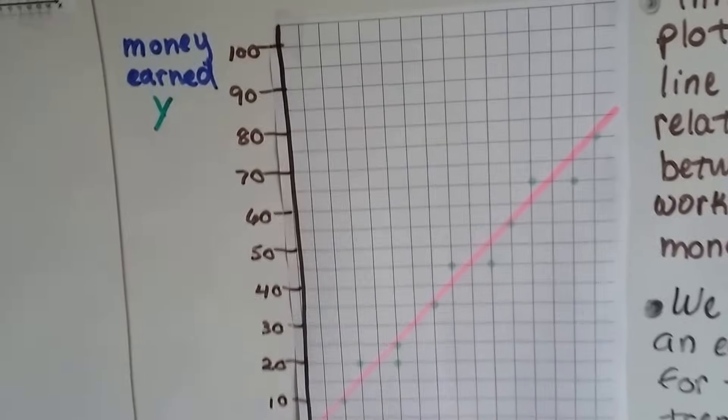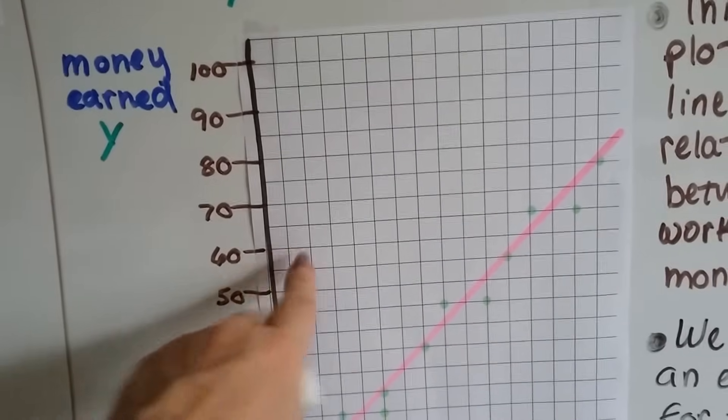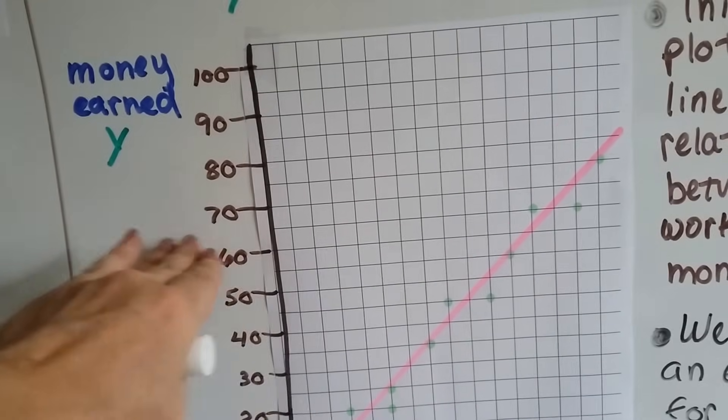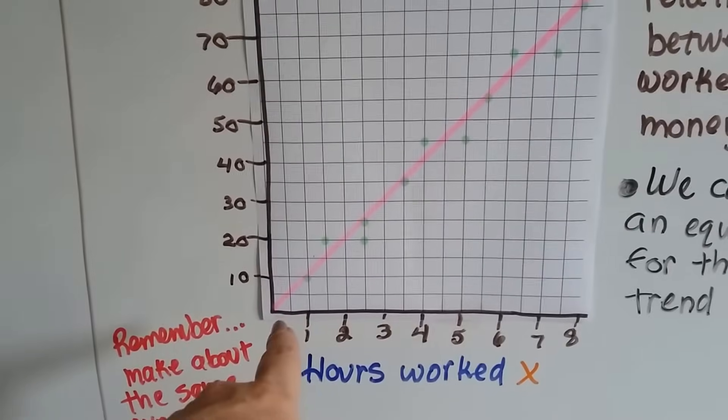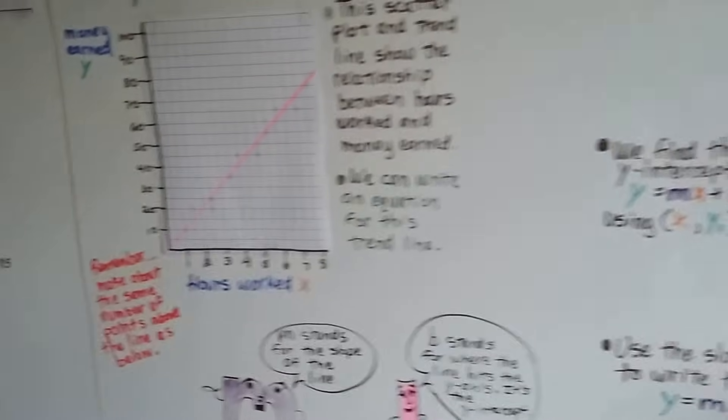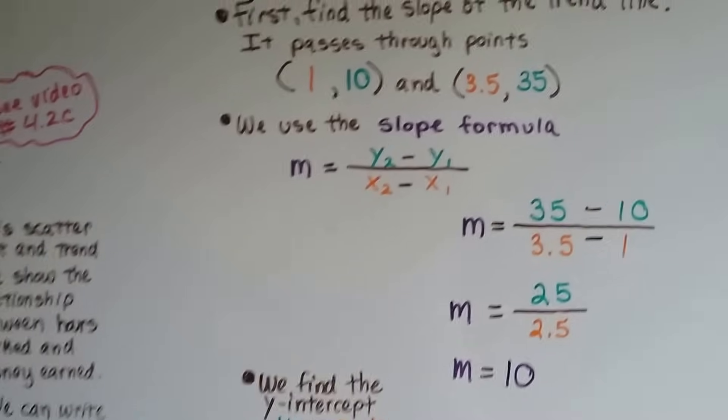So if the y-intercept was 60, then that means the line would go through 60 right here on the y-axis. Can you see where it's going through here? It's going through at 0 at the origin, isn't it? So tuck that in your mind for a little bit because we're going to end up finding that out in the end.